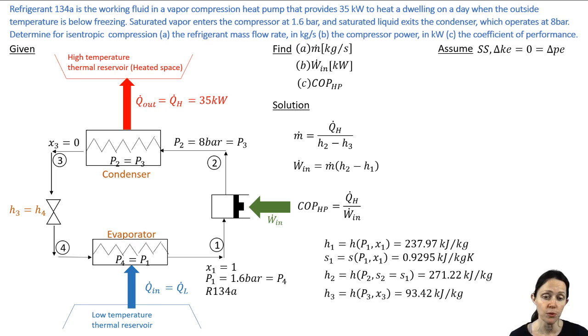H_3 - go to your saturated tables once again at 8 bar, and H_3 and H_4 are exactly the same. And then you just plug and chug: get your ṁ, Ẇ, and your COP, and you're all done. All right, I hope that was helpful. Let me know if you have any questions.